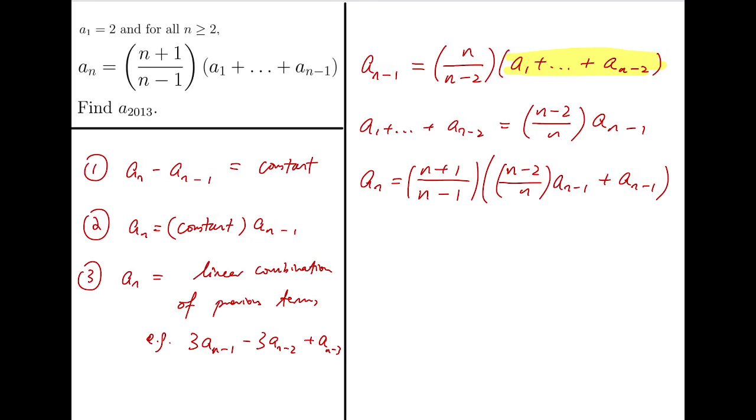Now after putting the second equation into our original equation, we've managed to write a_n only in terms of some polynomials and its previous term. So now we simplify.